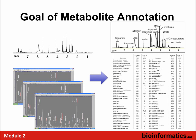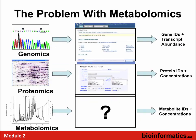In genome and proteome annotation, the tools have been around for a long time. In genomics, we have BLAST, GenBank, and NCBI. You can take your raw DNA sequence, RNA-seq, or transcriptomic data, and very quickly identify genes and calculate transcript abundance. In proteomics, there are tools like Mascot where you can take your mass spectra, upload them, and get protein IDs — with relative concentration data based on peak abundance.